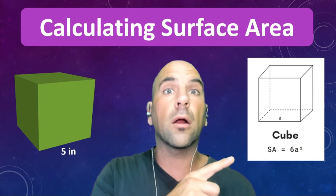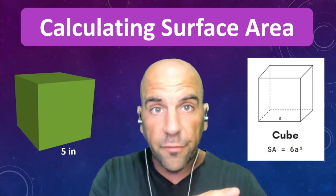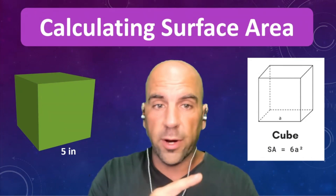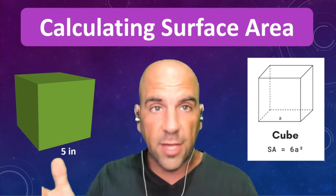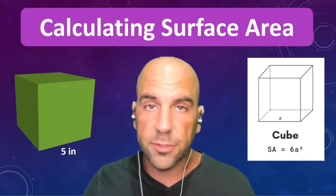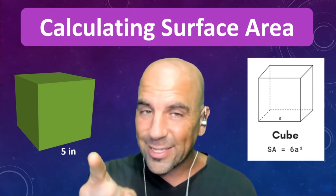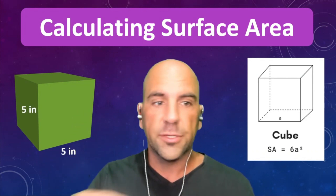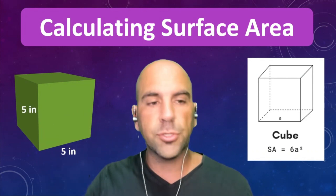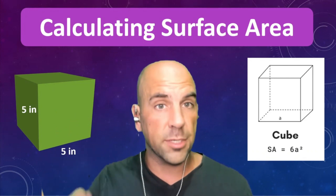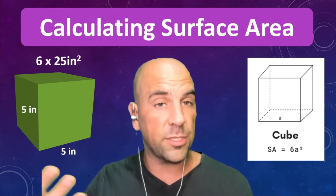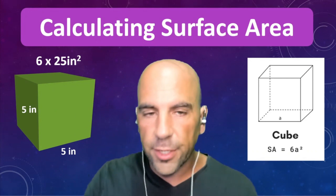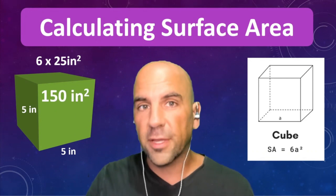First is a cube. The formula for this is as simple as six times a squared, and a is the width or length of a side. They're all squares, so all the lengths and widths are going to be the same. There are six sides, so if the width is five, then the length is going to be five. That's five squared — six times 25 inches squared. Inch times inch, you've got to square it. It's going to be 150 inches squared.